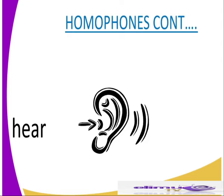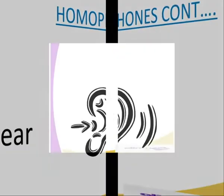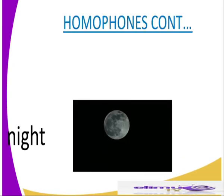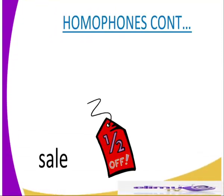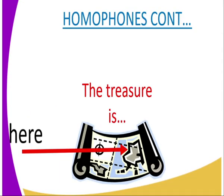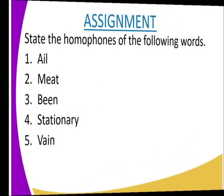Another homophone example is 'here' and 'hear.' We may not know if it refers to 'here' as in a place, or 'hear' which means hearing — but they have the same pronunciation and different meanings. As shown in the pictures, we also have 'knight' and 'night,' 'saw' as the person who saw something and 'saw' as a tool, and the word 'sail' and 'sale.' The word 'hear' refers to the act of hearing, while 'here' refers to a location.